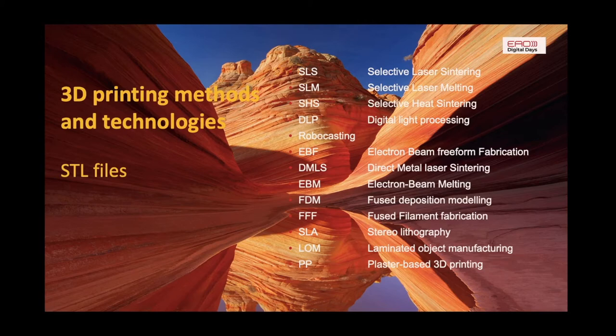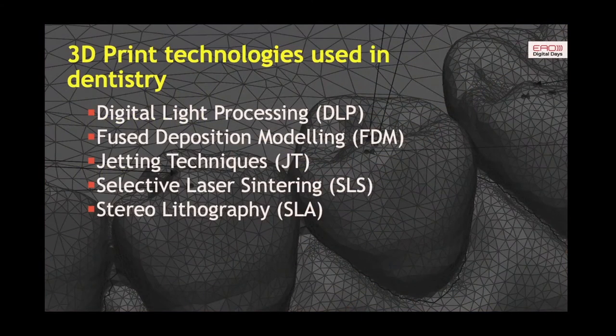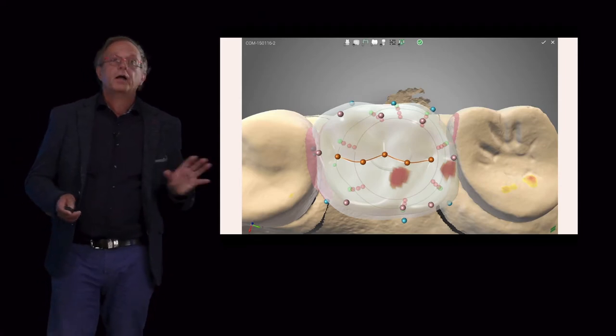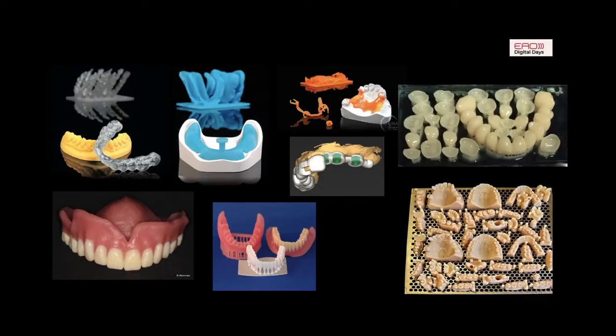I'll take five of these technologies: digital light processing, fused deposition modelling, jetting techniques, selective laser sintering, and stereolithography. It works the same as for your milled crown or bridge — you design it, make an STL file, and then you can print it. This slide shows a diversity of objects used in dentistry that have all been printed, in this case in a resin.